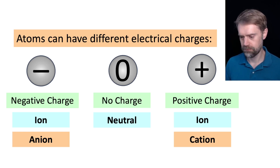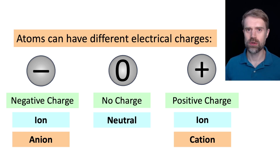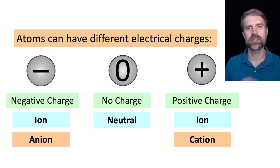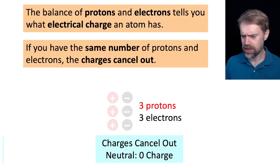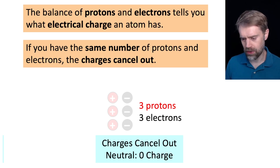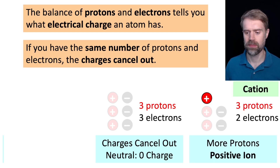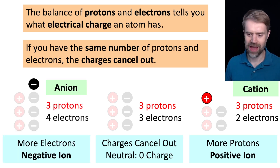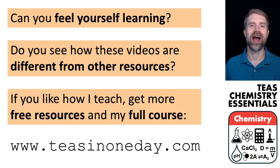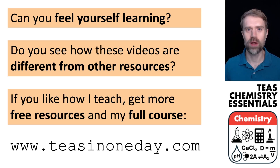Here's a summary of what you should know. Atoms can have different electrical charges. An atom with no charge or zero charge is neutral. Atoms that have a charge are called ions. Negative ions are called anions, and positive ions are called cations. The balance of protons and electrons tells you what electrical charge an atom has. If you have the same number of protons and electrons, the charges cancel out. If you have more protons than electrons, you have a positive ion or cation. If you have more electrons than protons, you have a negative ion or anion. Check out my website at teesin1day.com. Best of luck on the TEAS.